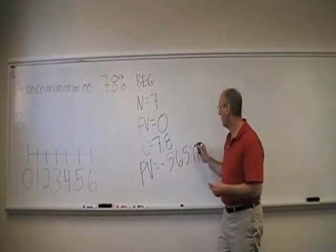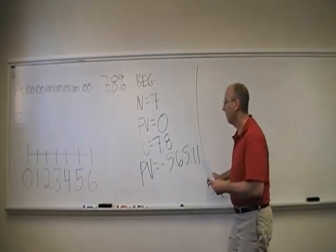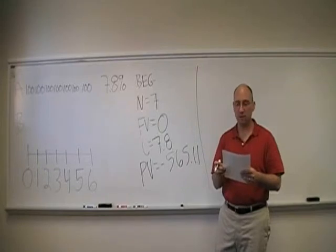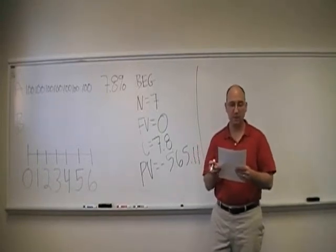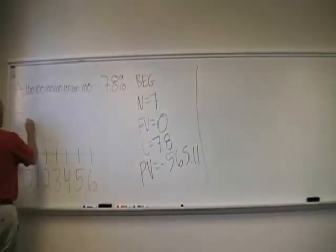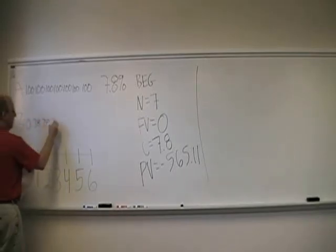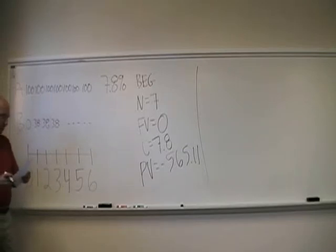So now we know the value of A and the expected return of A. How about B? B is expected to pay $38 per year forever. It is expected to make its first payment in one year from today. So nothing today, then 38, 38, 38, forever and ever. And it has a value of 520.